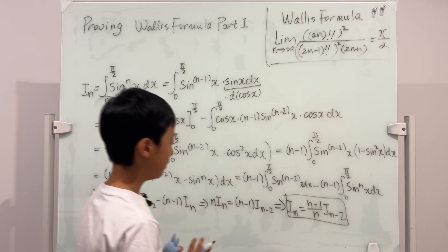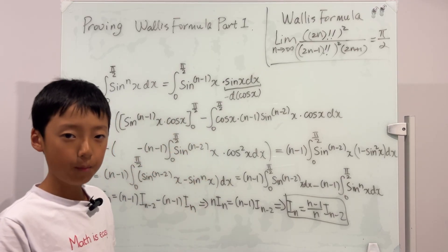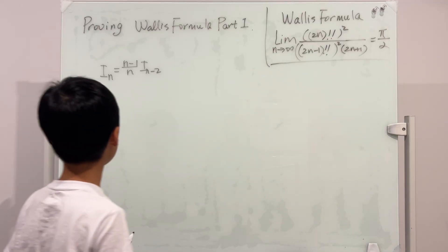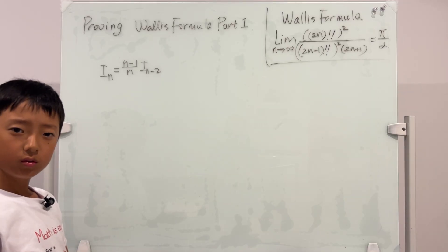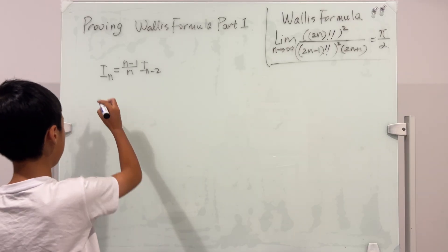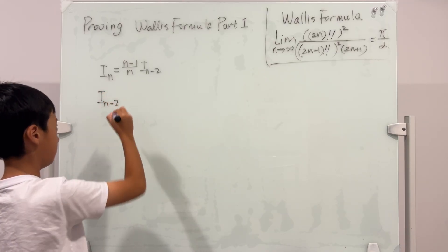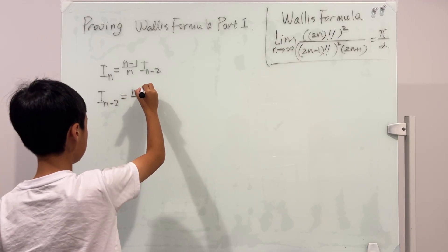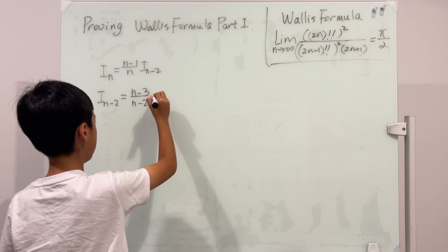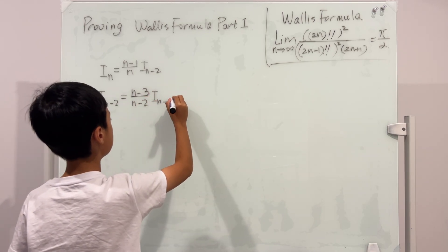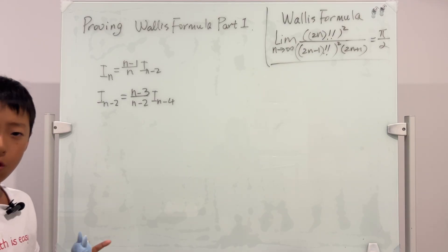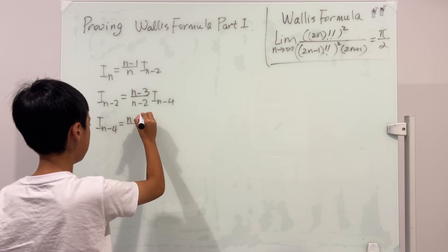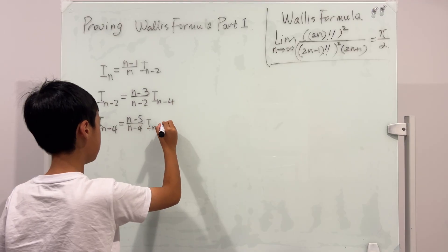Now we can see we filled up the whole whiteboard, so I'll rub it out and place it at the top again. Now what do we do? Why don't we just write out I_{n−2}? That's a logical thing to do. So this equals — subtract 1: (n−3)/(n−2) times I_{n−4}. And we can still keep going: I_{n−4} equals (n−5)/(n−4) times I_{n−6}.